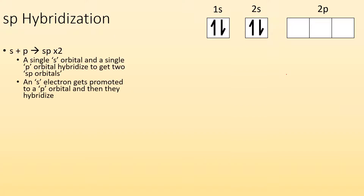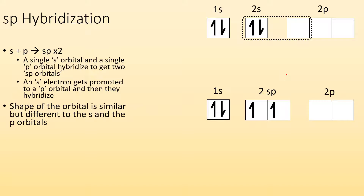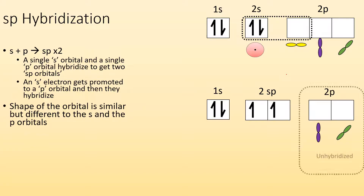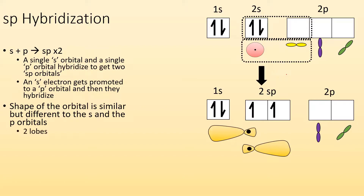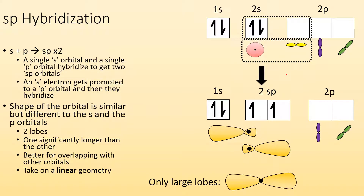For sp hybridization, I take an s orbital and a p orbital and make two hybrid orbitals that we describe as sp hybridized. I take the s, I take the p, I mix them together, and I make two sp hybridized orbitals. The shape of the orbital is similar but different to both the s and p orbitals. The two p orbitals we didn't touch we call unhybridized — they didn't change at all. When we mix the s and the p together, we get hybridized orbitals with two lobes, where one is significantly larger than the other, helping them overlap better with other orbitals. It takes on a linear geometry, and when we look at only the larger lobes, it kind of looks like a bow tie with the nucleus in the middle.